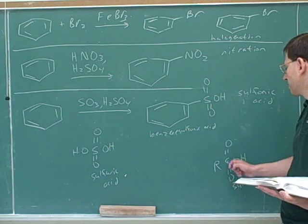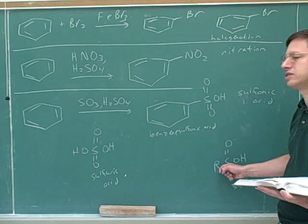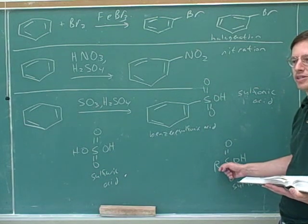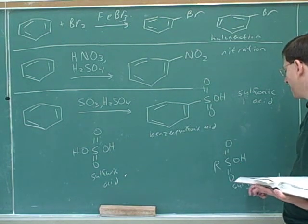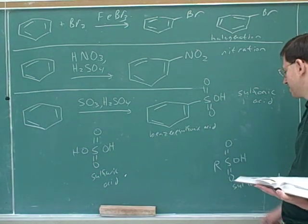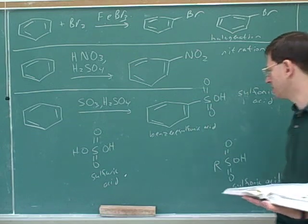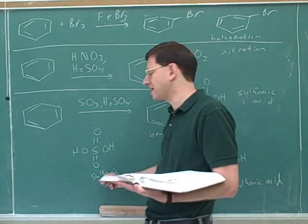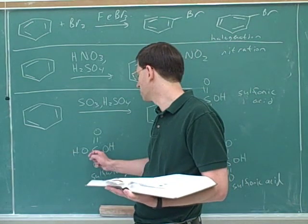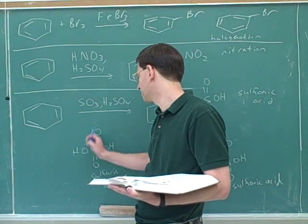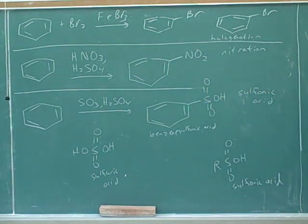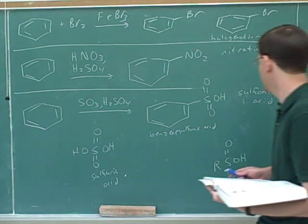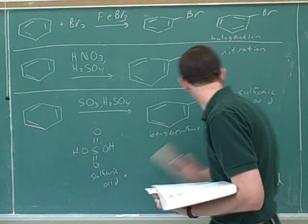In all of those cases we had a sulfur with three oxygens attached to a carbon chain. When do we say sulfon? When we have a sulfur with three oxygens attached to a carbon chain. When do we say sulfur? When we have a sulfur attached to four oxygens. Those are minor points, but that's why this is called a sulfonation.